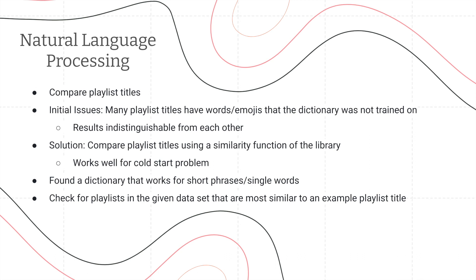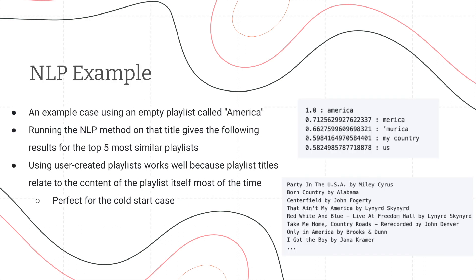The last method was natural language processing, used to solve our cold start problem. We started by comparing playlist titles, and some initial issues were that many playlists have words or emojis that the dictionary we were using was not trained on, which made the results indistinguishable from one another. Our solution was to compare playlist titles using a similarity function in the library, and we found a dictionary that works for short phrases and single words. For example, we had an empty playlist called 'America.' We ran our NLP method and it showed us five playlists with the most similar titles — America, America, Murica, etc. — and then we generated our recommendations from those playlists. This works really well because user-created playlist titles relate to the content of the playlist, making it a strong solution for the cold start case.